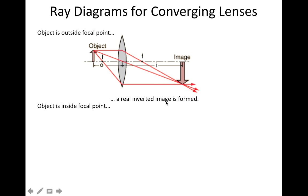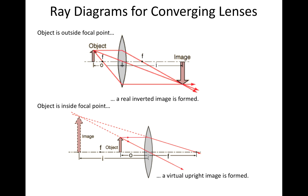However, if we have an object inside the focal point of a converging lens, something like this, then something really weird happens. So here's this object. It's really close to this converging lens. And what you notice is the light ray that emanates off of this object actually goes down and to the right.